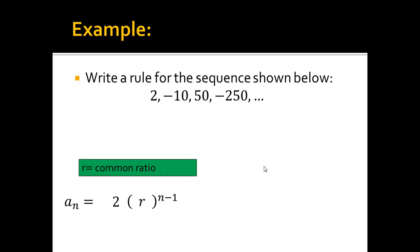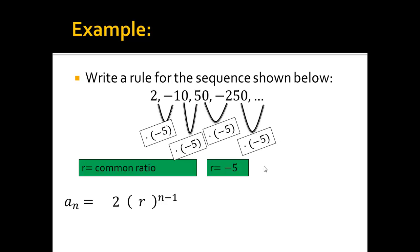All right, the next thing we're going to want to do is find the common ratio. Well, to get from 2 to negative 10, I'm going to be multiplying by negative 5. And then to get from negative 10 to 50, I'm going to be multiplying by negative 5 again. You'll see the sign change means that r is a negative number, which is totally okay. And I see this pattern is going to continue. So I know my r value is negative 5.